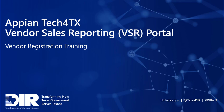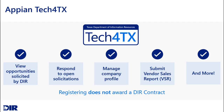Welcome to the Texas Department of Information Resources Tech for Texas training video for vendor account registration. The Tech for Texas platform, built on Appian software, is a centralized portal enabling vendors to view opportunities solicited by DIR, respond to open solicitations, manage their company profile, submit vendor sales reports, and more. This training will walk you through how to set up your company account and designate a point of contact.